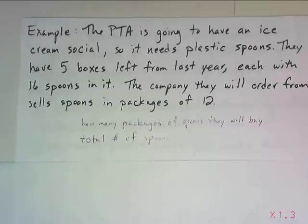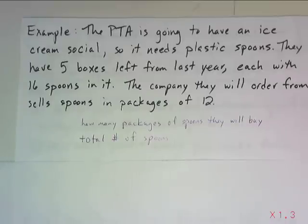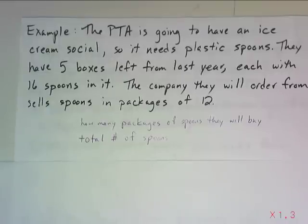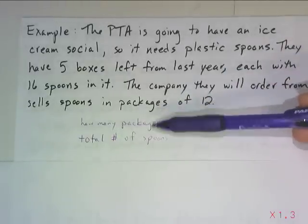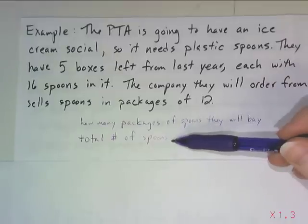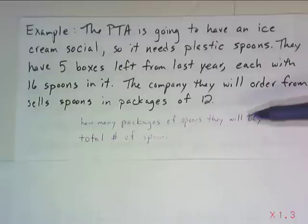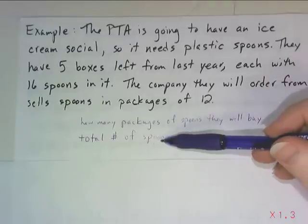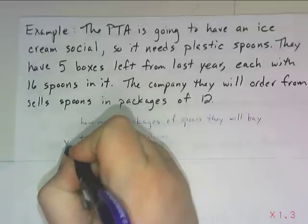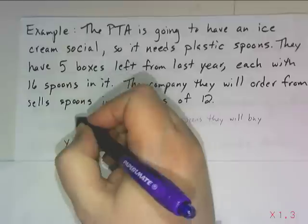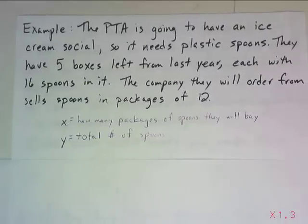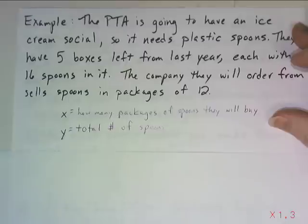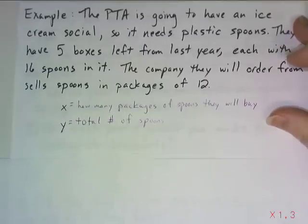We can use x and y, or some other more descriptive letters. I'm going to stick with x and y for this first example. That means I need to figure out which one's the independent variable and which one's the dependent. Does the total number of spoons depend on how many packages they buy, or does how many packages they buy depend on the total number of spoons? The total number of spoons depends on how many they buy — so that's y, and the number of packages is x. Now let's figure out the rate and the starting value from the problem. The company sells 12 spoons per package, so 12 is our rate — the m value.